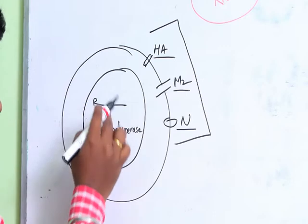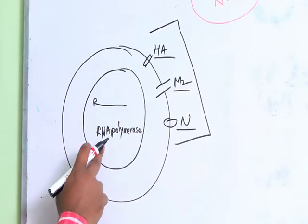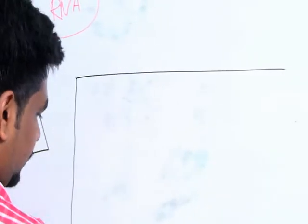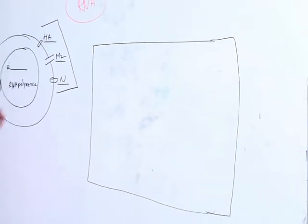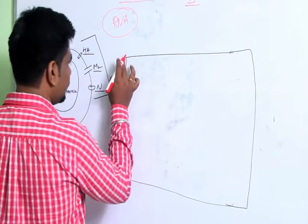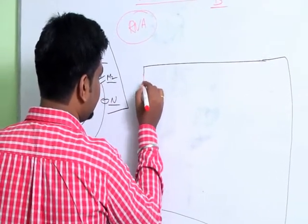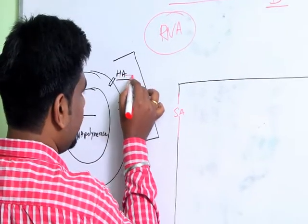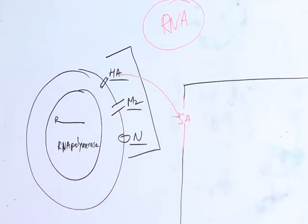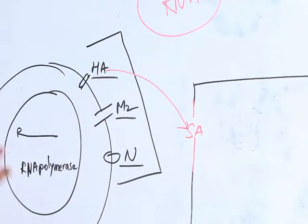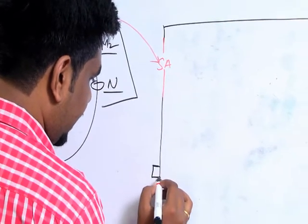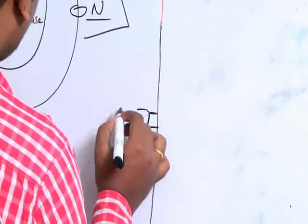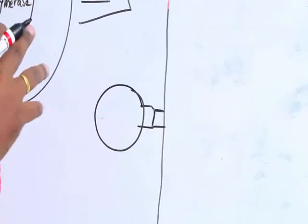During infection, the first function comes from the hemagglutinin. The host cell has sialic acid, which allows the hemagglutinin to come and bind to the host cell. So the function of hemagglutinin is binding to the sialic acid on the host cell surface.